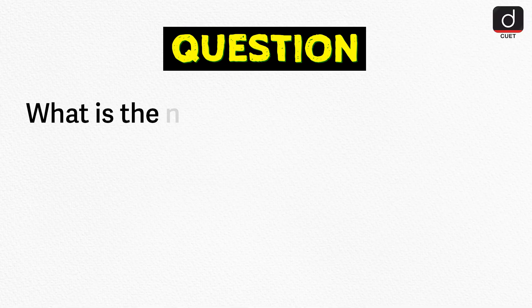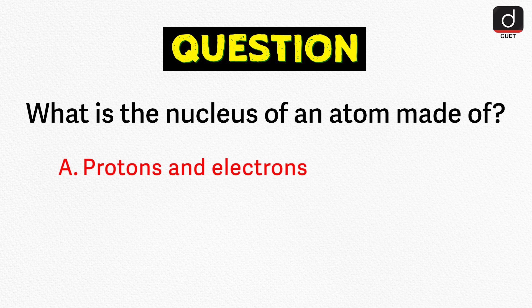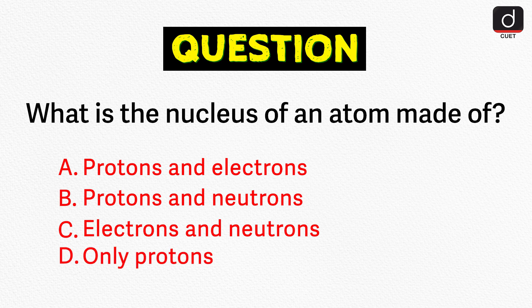Now, here's a question for you. What is the nucleus of an atom made of? A. Protons and electrons. B. Protons and neutrons. C. Electrons and neutrons. D. Only protons.